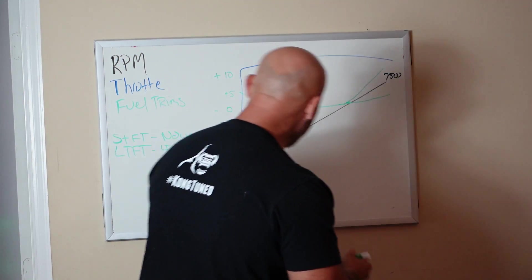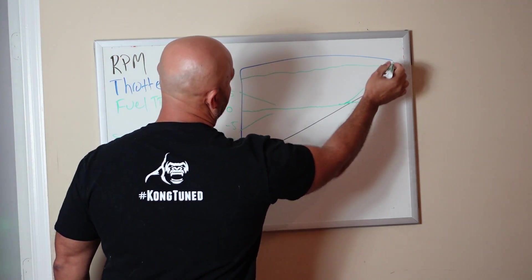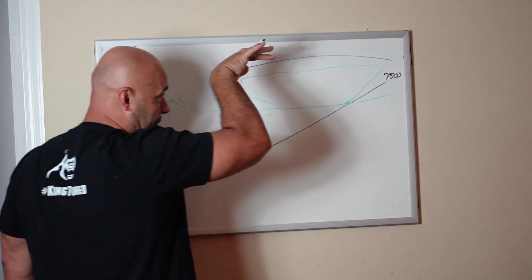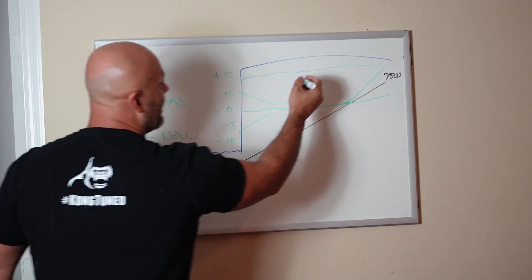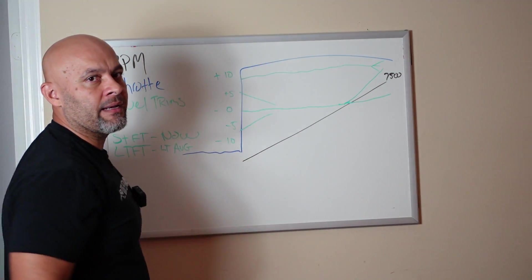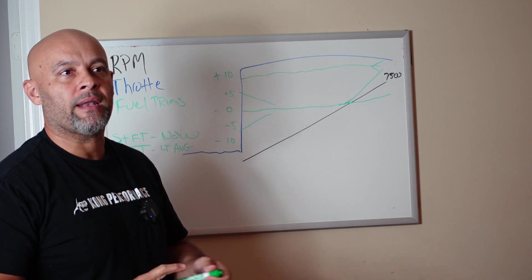When we see a spiking fuel trim, that's a fuel delivery issue. Because if it was tune-related, it would be immediately lean. The moment you go WOT, boom. It's flat, but it's lean throughout the whole thing. It's not trending up or down. I think, okay, maybe I got to add a little fuel to the MAF.